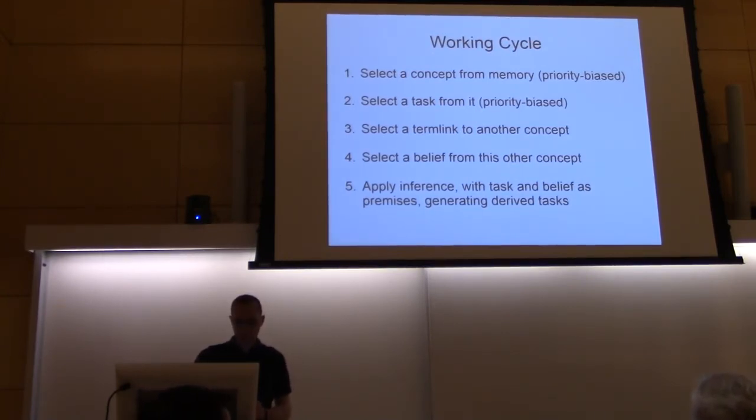Also the tasks. At first we select a concept, then from this concept we select a task, and this we do also priority-based, so the tasks inside of a concept also compete for attention and have their own priority value. Then we select a link to another concept. If we did this, we can finally select the second premise from this other concept we link to. Now we have both premises, and we can apply inference. By this inference process, we can generate new derived tasks. This is not the end of the story.